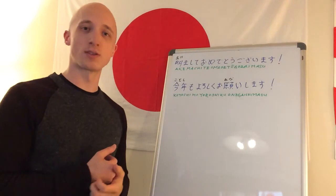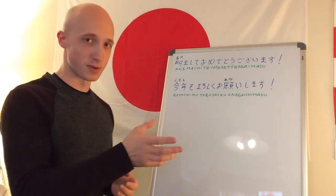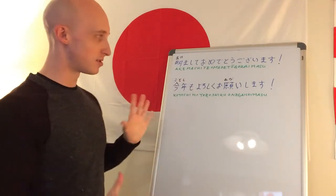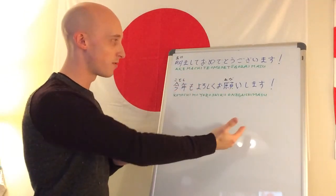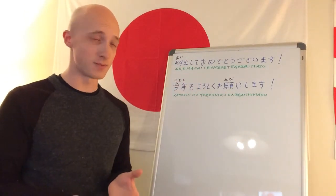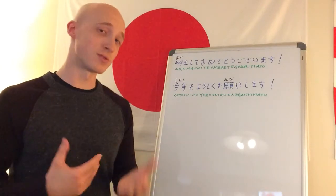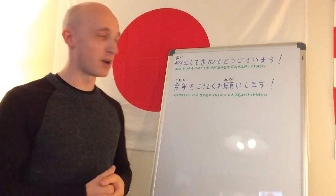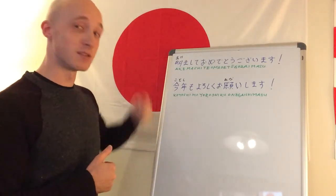I've written the furigana, which are the readings for the kanji. So this is crazy, it's long. These are our two phrases, and this is the whole way to say Happy New Year. You can say just the first part, Akemashite omedetou gozaimasu, on its own and it can get by, but most Japanese people will say both in succession.